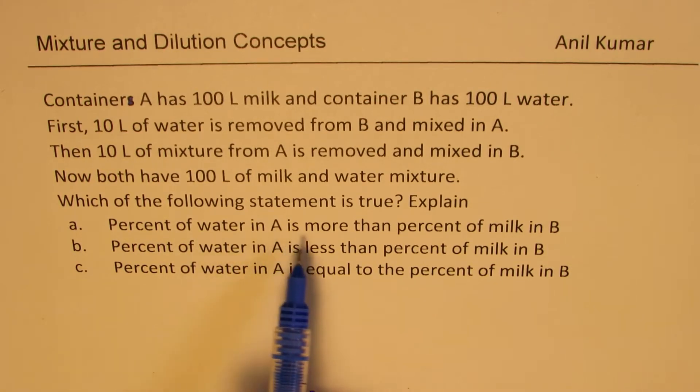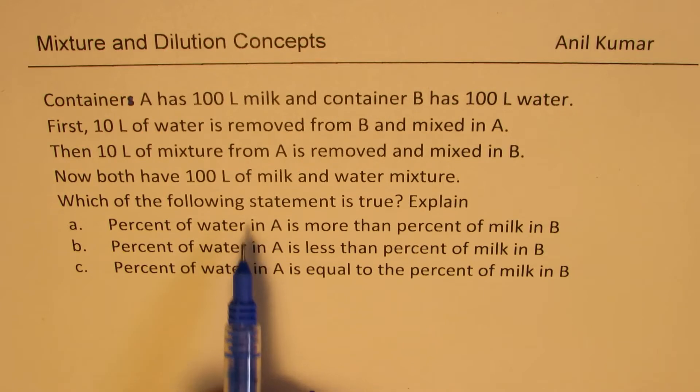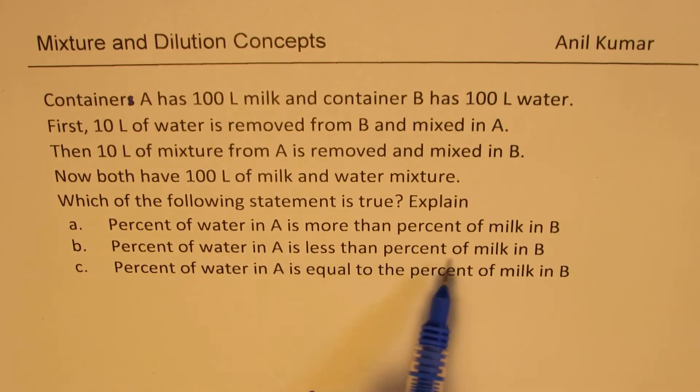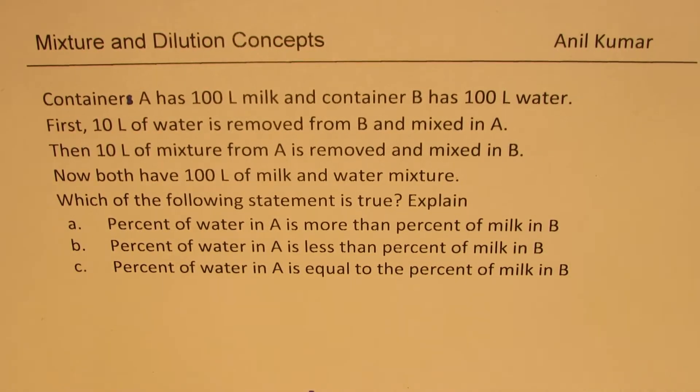Percent of water in A is more than percent of milk in B. Percent of water in A is less than percent of milk in B. And C is percent of water in A is equal to the percent of milk in B. So you have to think about it and select the right option and provide reason.